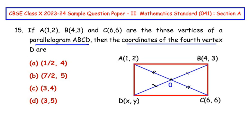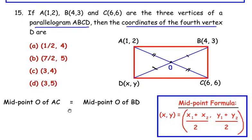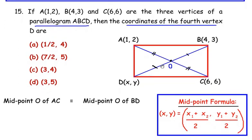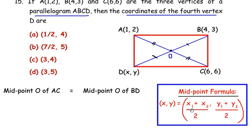So here I have written midpoint O of the diagonal AC is equal to the midpoint O of the diagonal BD. And here I have also written the formula for the midpoint that is (x₁ + x₂)/2, (y₁ + y₂)/2.